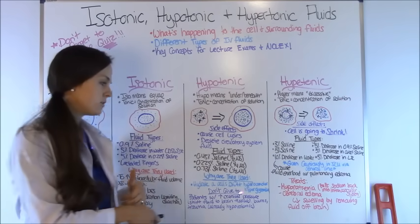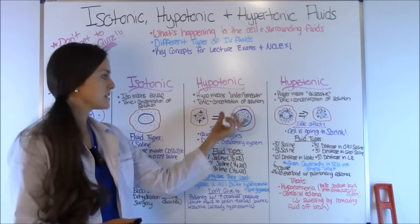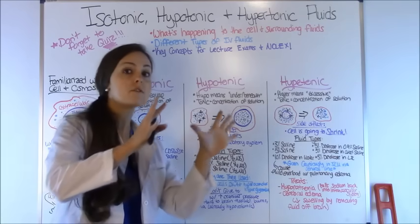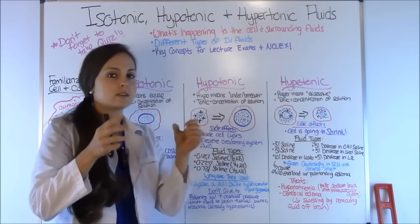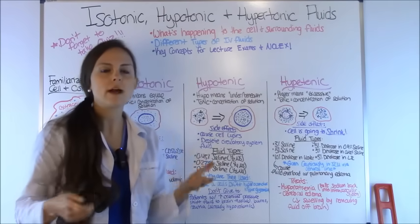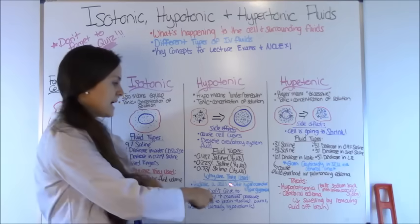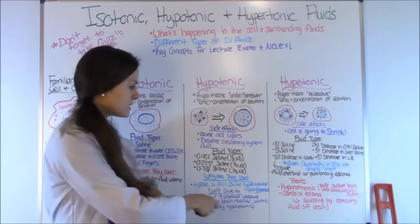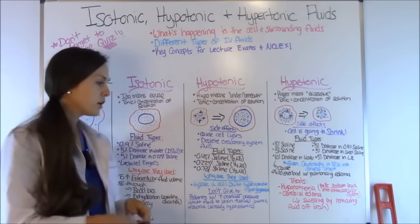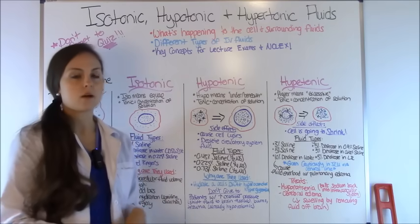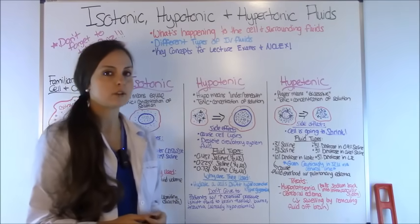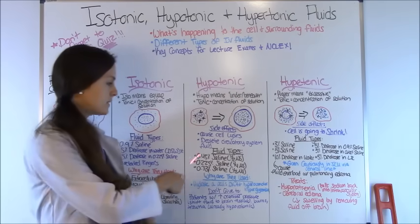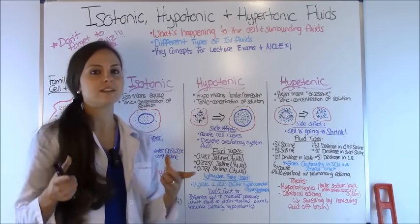Why are hypotonic solutions used? They are used when the cell becomes dehydrated — we want to move fluid into the cell because it has shrunken up. Conditions that cause this include diabetic ketoacidosis (DKA) and hyperosmolar hyperglycemia. Generally, if a patient is in these conditions, they will be ordered one of these solutions to help hydrate the cell back.